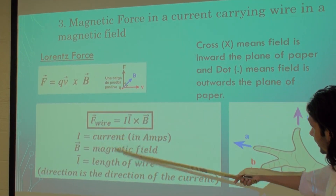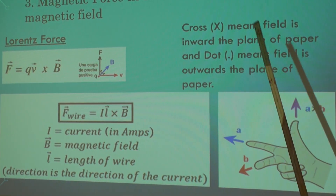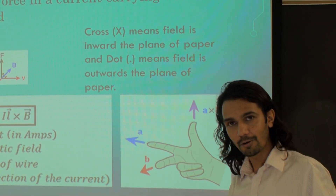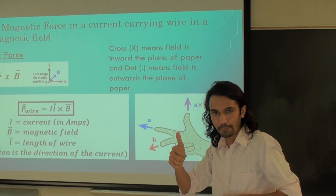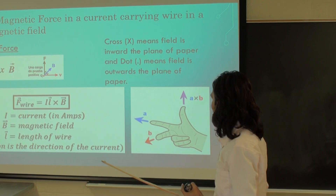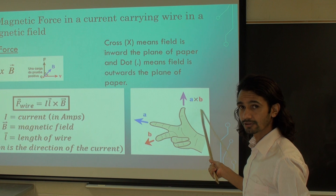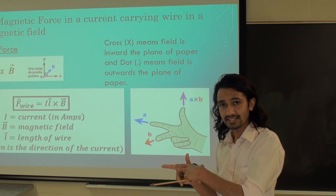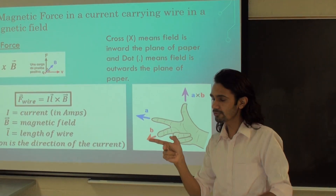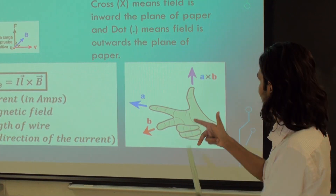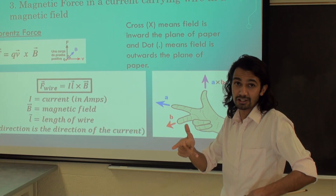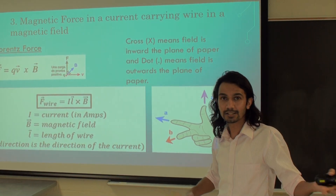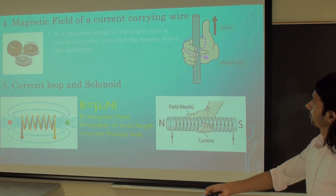The force on the wire is given by F = IL × B, where L is the length vector in the direction of the current and B is the magnetic field. In representation, we use a cross sign if the field is perpendicular to the plane of the paper going inward, and a dot sign for the field coming outward. For the vector product L × B, you can use the right-hand rule: point your index finger in direction of vector A and your middle finger in direction of vector B — your thumb points the direction of A × B. You can also use Fleming's right-hand rule.